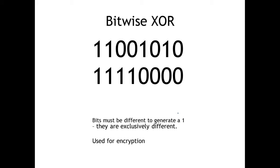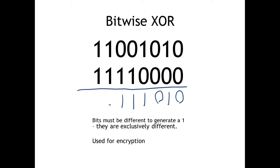Bitwise XOR is exclusive OR. Each bit needs to be different — exclusively different — in order to generate a one. So zero-zero gives a zero. One-zero: they're different, so that gives a one. Zero-one gives a one because the inputs are different. One-one gives a zero because they're the same. That's the result of the XOR operation.